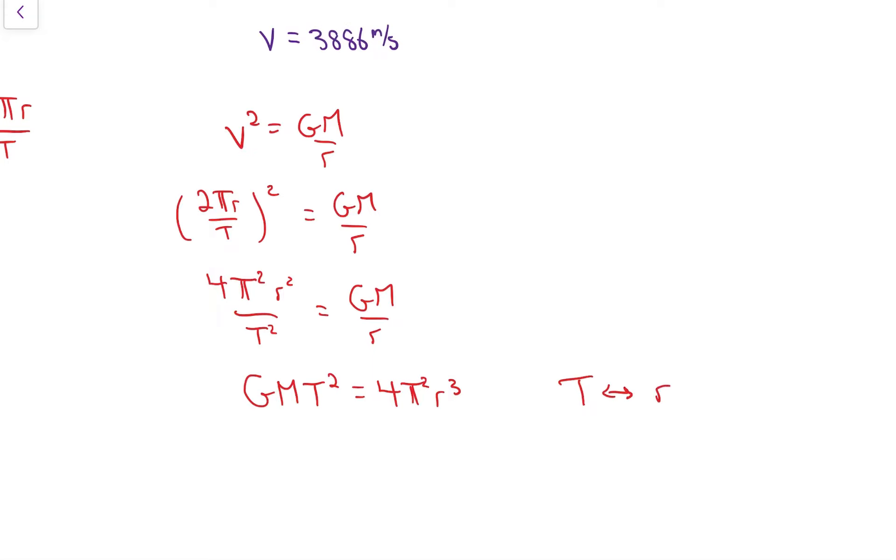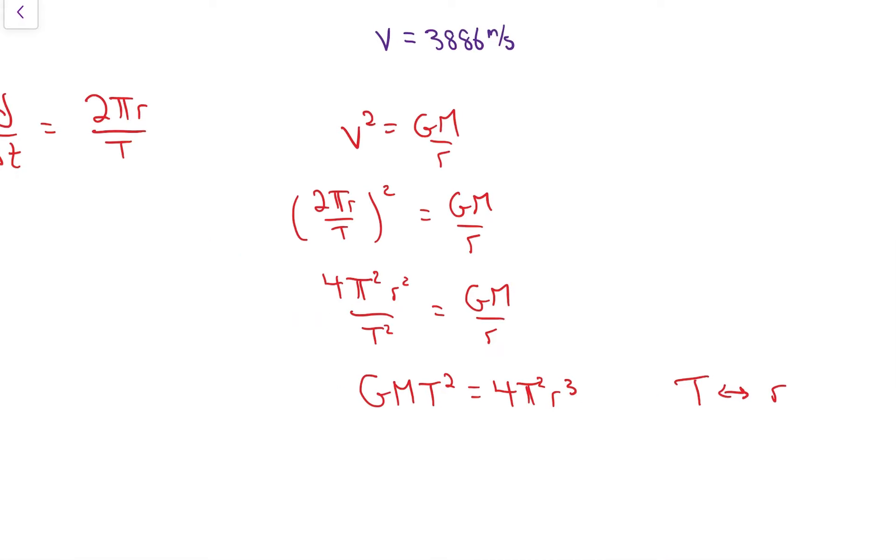It should make sense that since all the satellites at that 20,000 kilometer mark are going the same speed, it's going to take them the same amount of time to orbit the Earth. If I didn't ask for the speed, we could build this equation and just solve for time directly.